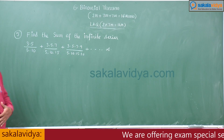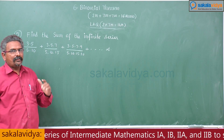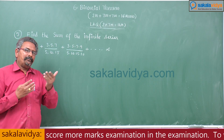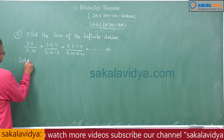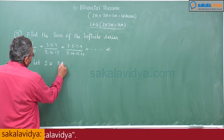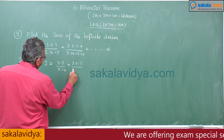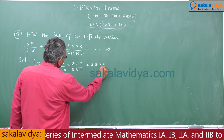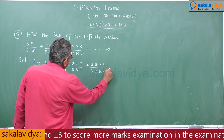Just observe — this is also an incomplete series because it does not begin with 1. That means some more terms are to be added to make it a complete series; after that, by comparing, we can find out. So let S = 3·5/(5·10) + 3·5·7/(5·10·15) + 3·5·7·9/(5·10·15·20) + ... to infinity.